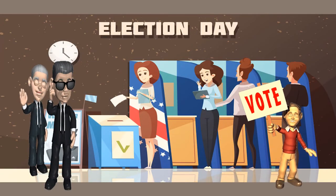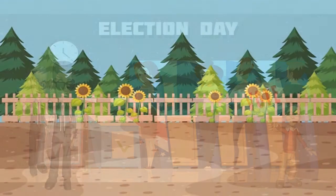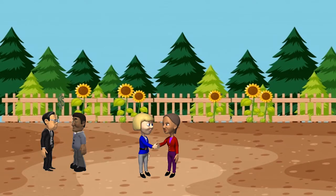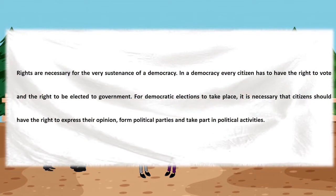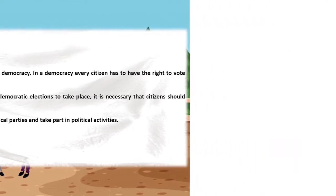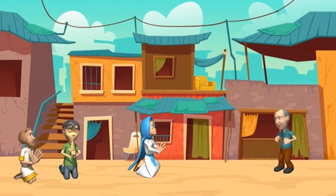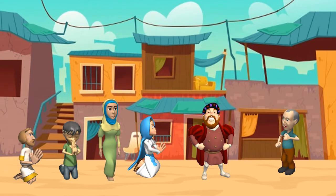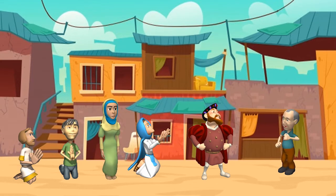Now let's start with the need of rights in a democracy. Rights are a crucial part of democracy. In every democracy, every citizen should have the right to express their opinion through vote. Every individual should exercise their right to choose or remove the representative who governs them. People should have the right to form parties and participate in political events. The very basic need of rights is to prevent minorities from being oppressed.